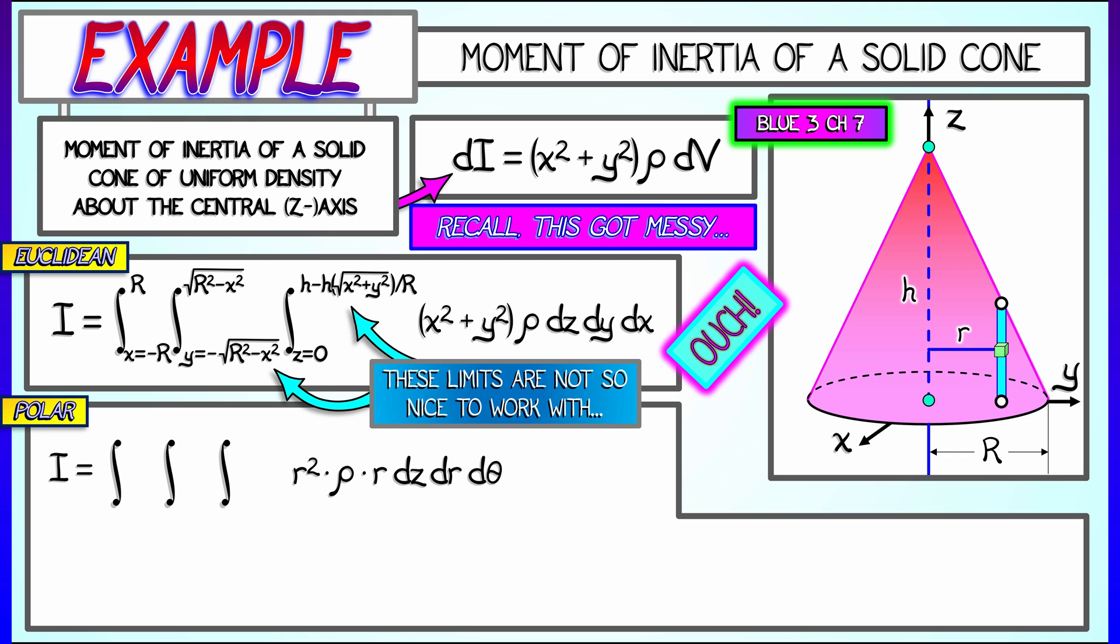However, the limits of integration are also not so bad. Doing integration with respect to z first, we go from z equals zero to z equals h times quantity one minus r over capital R. Remember, capital R is the radius of the base of the cone. Now, the limits on r and theta are even nicer because it's a circular disk in the xy plane. R goes from zero to capital R. Theta goes from zero to 2 pi.